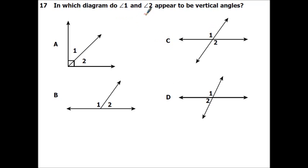Alright, in which diagram do angle one and angle two appear to be vertical angles? So remember, vertical angles are just angles when two lines intersect that are directly across from each other that are equal. So these aren't across. These ones aren't across. These are not across. So these are the only ones that are across.